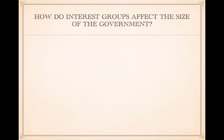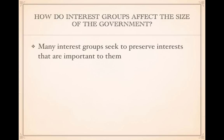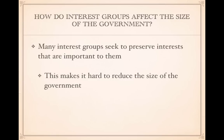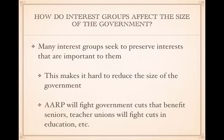Now how do interest groups affect the size or the scope of the government? Many interest groups seek to preserve interests that are important to them. An interest group that benefits from something wants to see that benefit continue. This makes it hard to reduce the size of the government because those interest groups will fight for that benefit to continue. For example, the American Association for Retired People will fight government cuts that benefit senior citizens, and teacher unions will fight cuts in education, specifically when it comes to funding. So these interest groups help contribute to the size and the growing of the federal government.